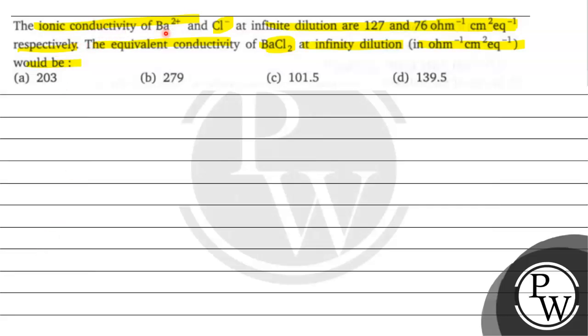How do we solve ionic conductivity of Ba2+ and Cl-? This ionic conductivity is equivalent in the form of conductance, because what is there? We can find out from this unit.